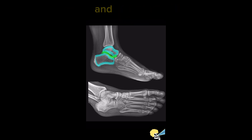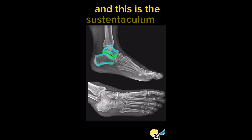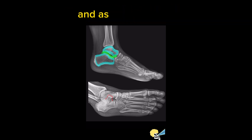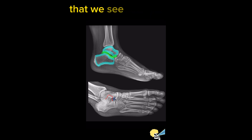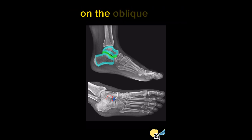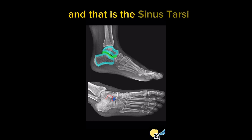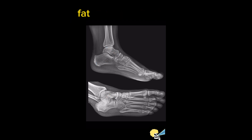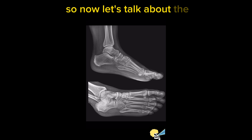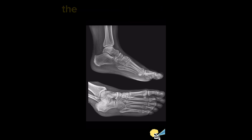Of interest, the calcaneus has a bump at the medial aspect of the body called the sustentaculum tali, and as the name notes, it sustains the talus. There is a small hole visible between the talus and the calcaneus on the oblique view, and that is the sinus tarsi, which is usually composed of fat and nerve endings.